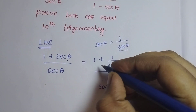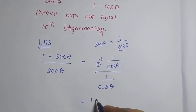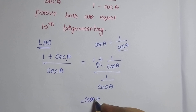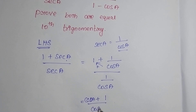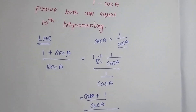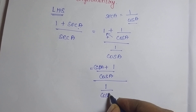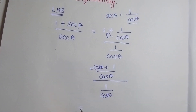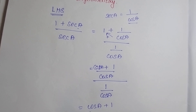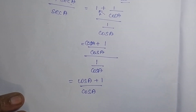So now I am going to take LCM in that place. Therefore, 1 plus cos A plus 1 divided by cos A, the whole divided by 1 by cos A. This is equal to — I am going to write this as cos A plus 1 divided by cos A.